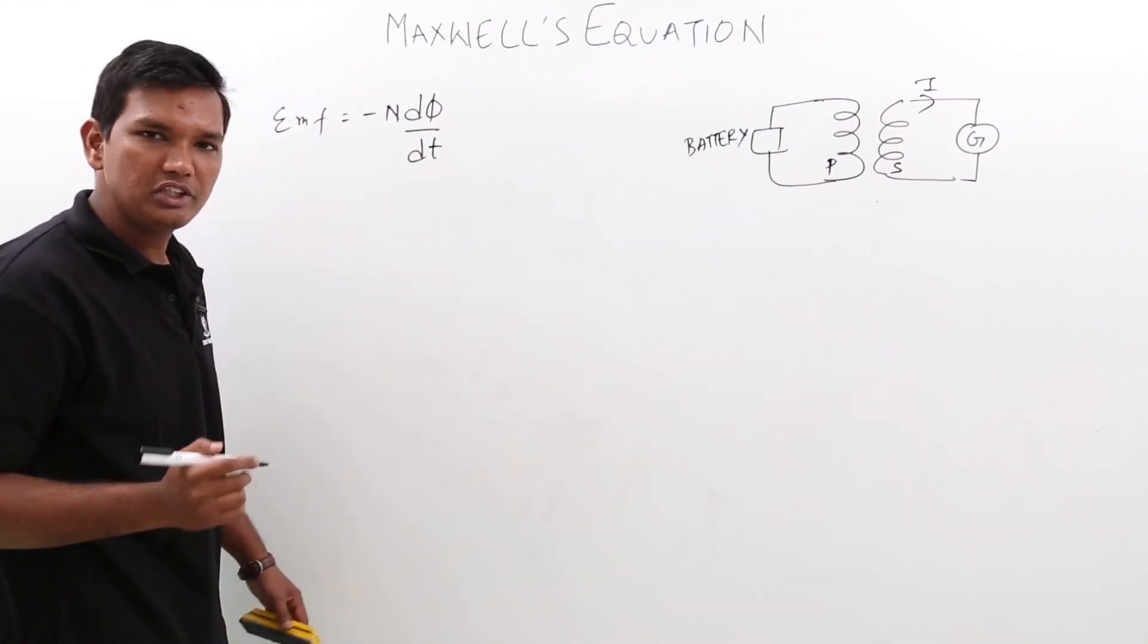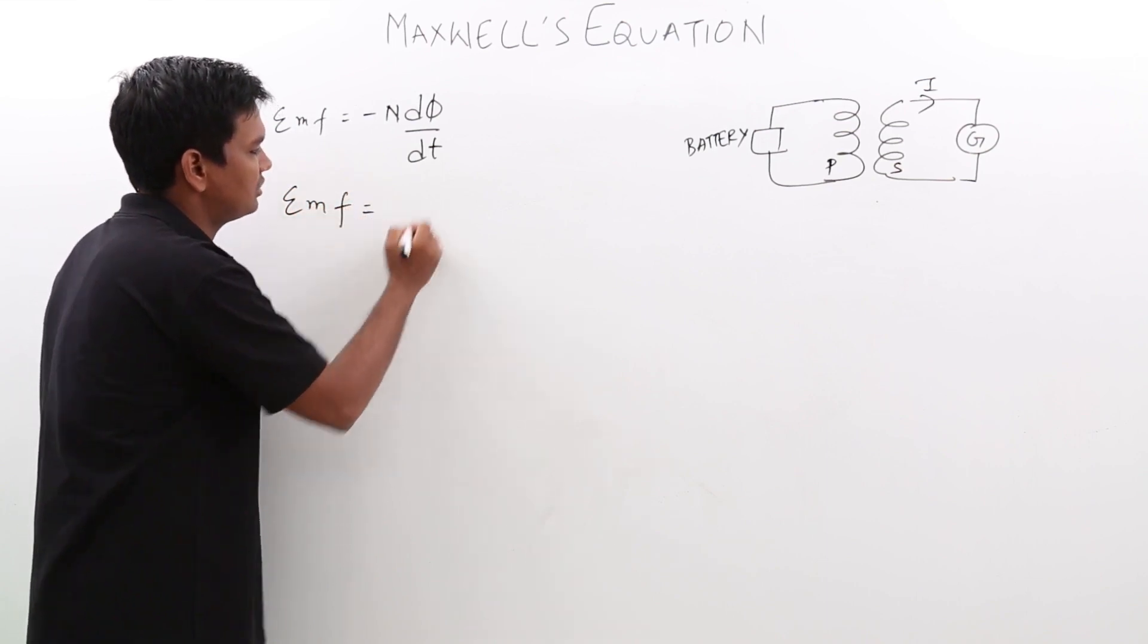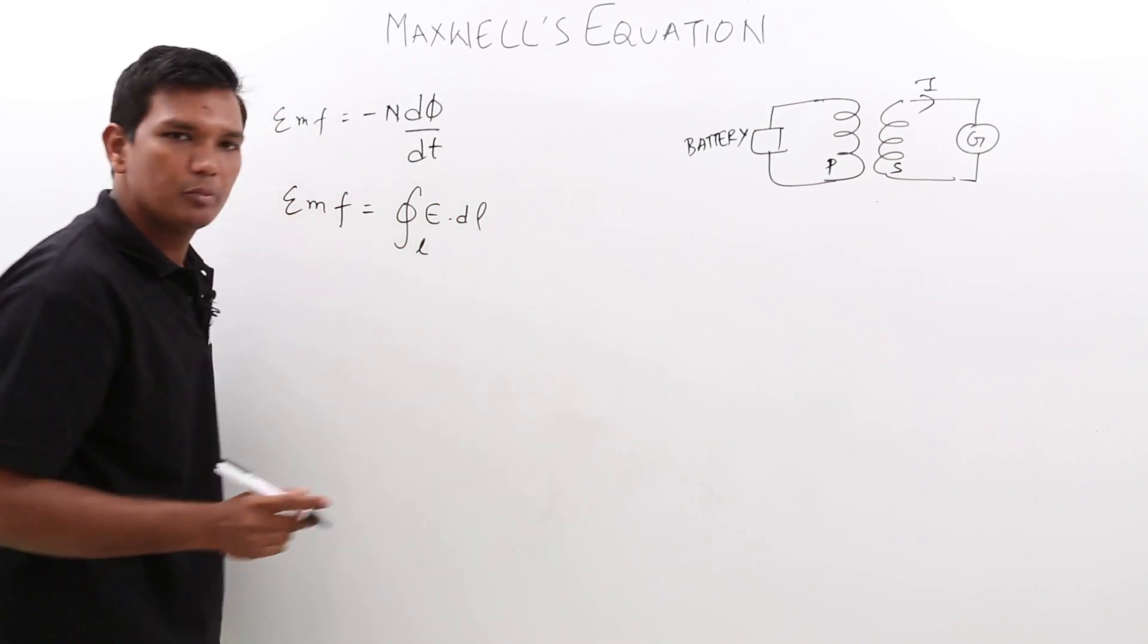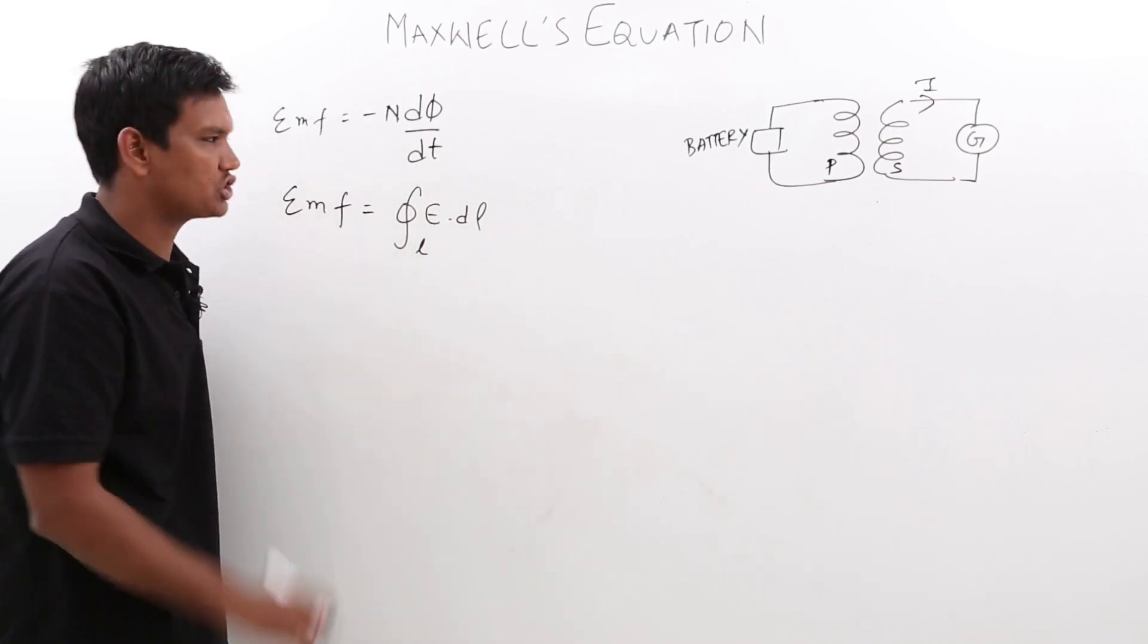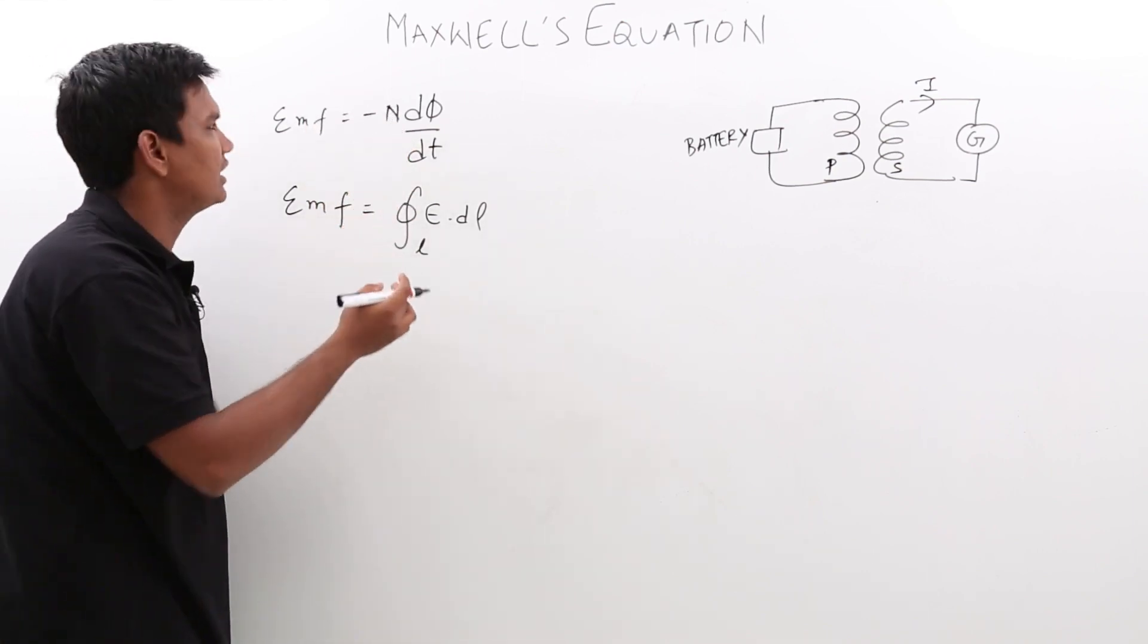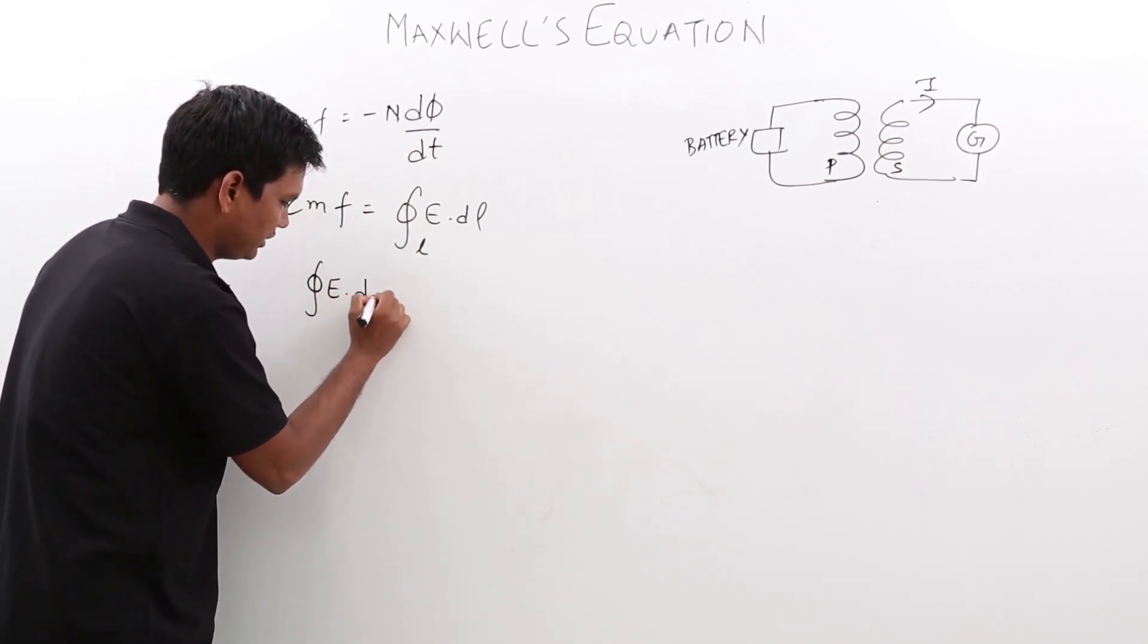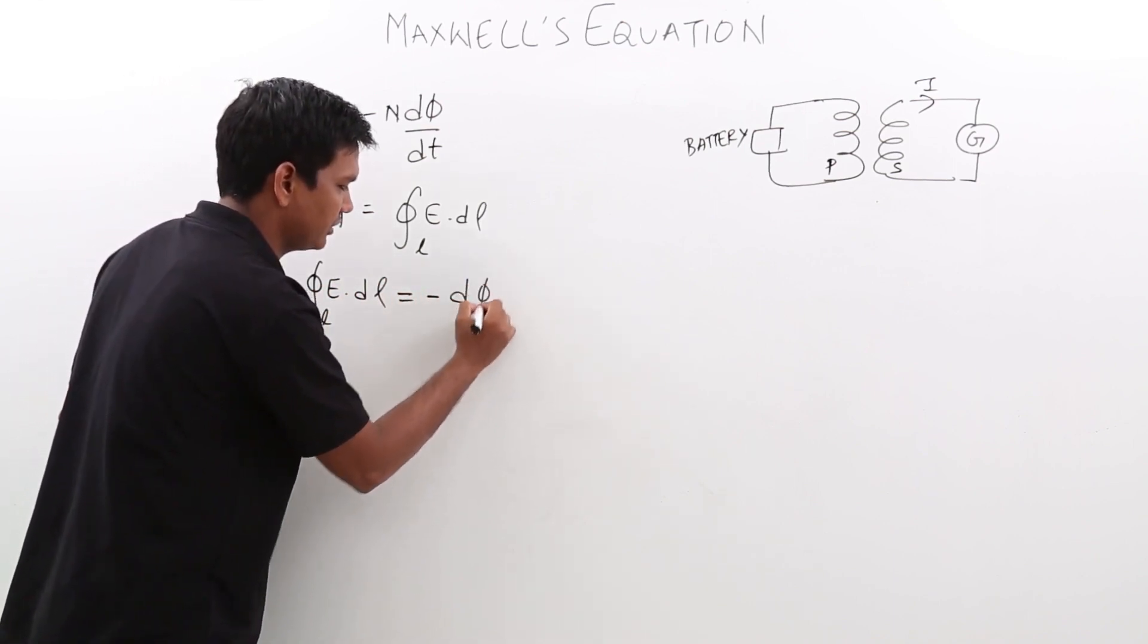If you remember in the potential topic, can I say this EMF is equal to E dot dl over the line integral, because that is nothing but the potential and EMF is also nothing but your potential. Can we compare these two equations? Yes, we can compare these two equations. Let us remove N now, as of now. So it would be E dot dl over the line integral is nothing but minus dφ/dt.